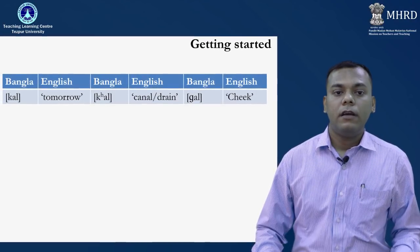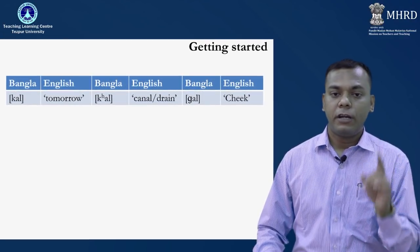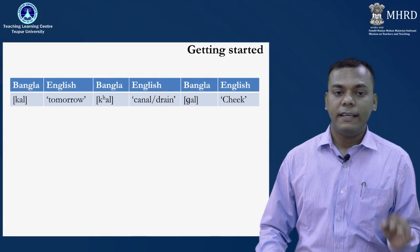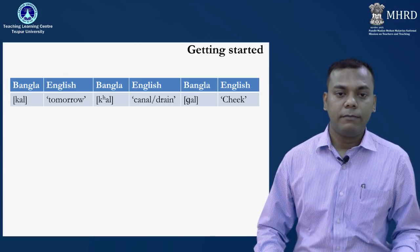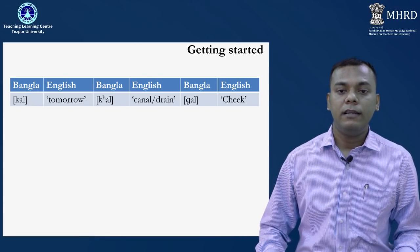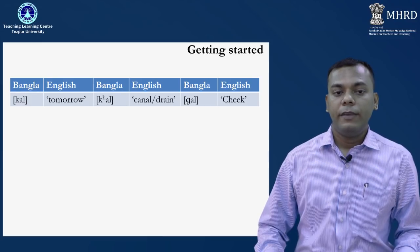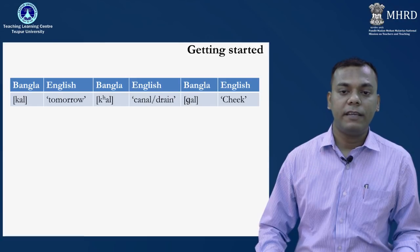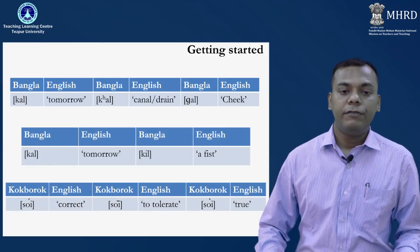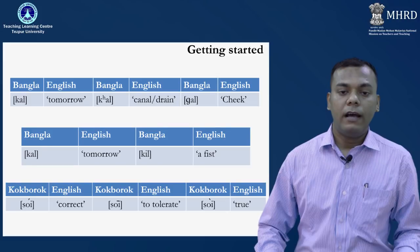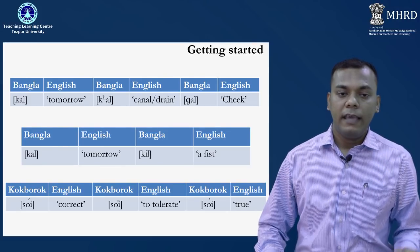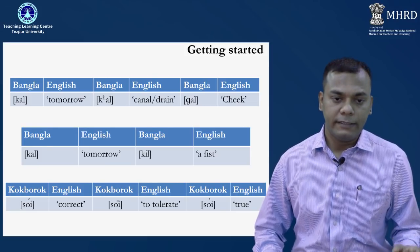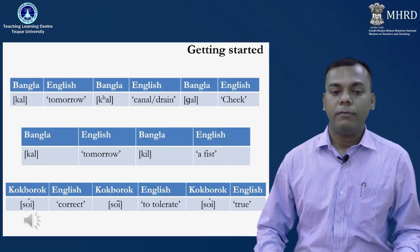When you change one phoneme, your lexical meaning would be changed. Let us take examples of Bangla words: KAL, KAL and GAL. Here we are changing the onset consonant — KAU, KHAU and GAU — and we have three distinct meanings. Similarly, if you change the vowel, KAL and KILL give us 'tomorrow' and 'a feast' — again, just changing the vowel gives us new words. However, this is not the case with Kokborok.